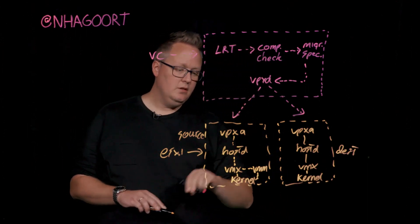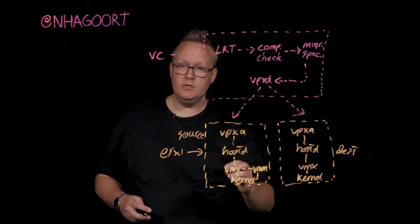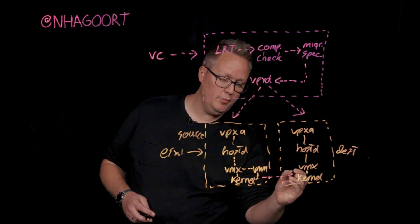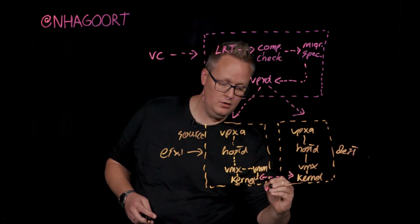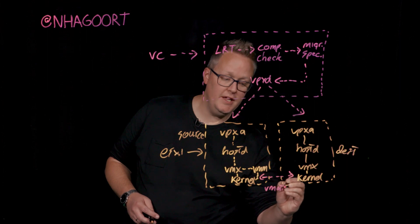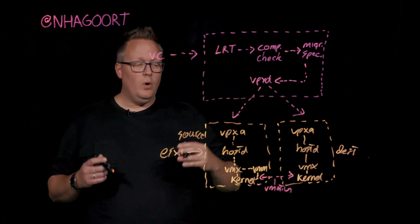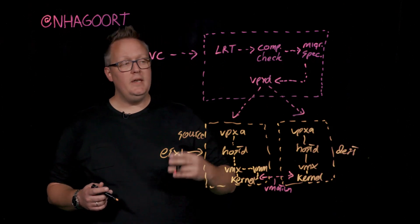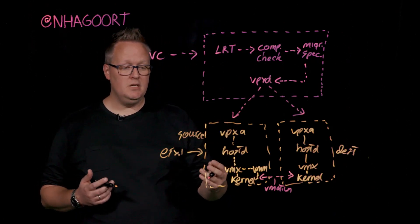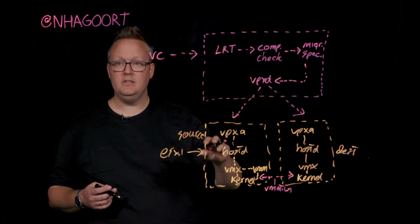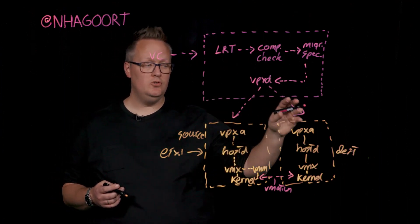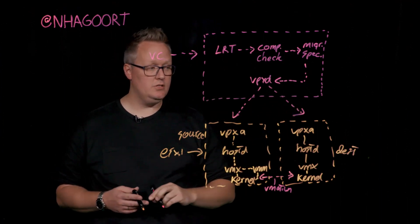And between the kernel modules on the source and destination hosts, sockets will be opened on the vMotion network, the vMotion enabled network I must say. So once this is all set up, we now have everything in place for the VM to be migrated from the source ESXi host to the destination ESXi host.